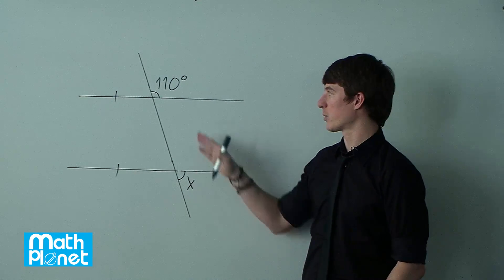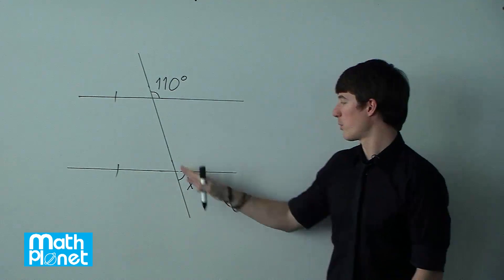Here we have two parallel lines, and we're given just this angle, and we want to find this angle x.